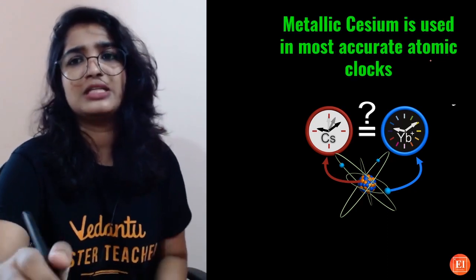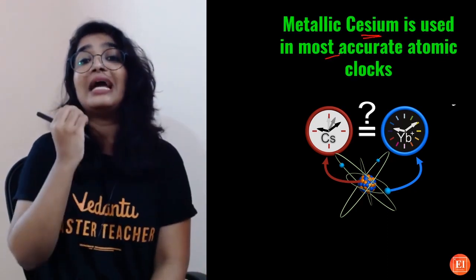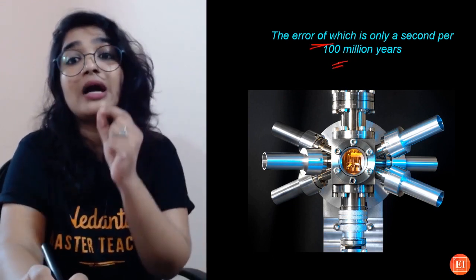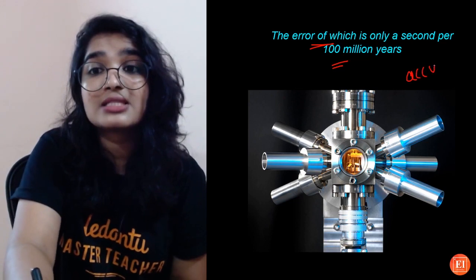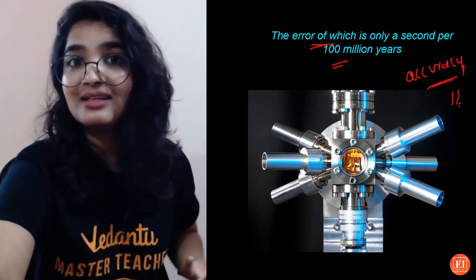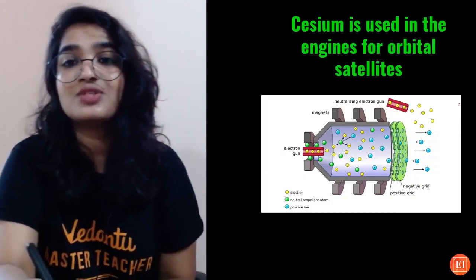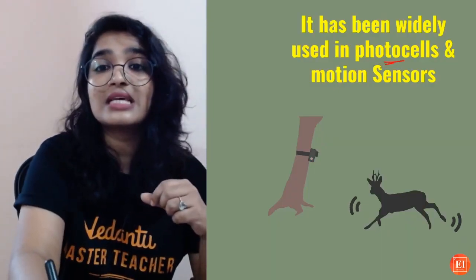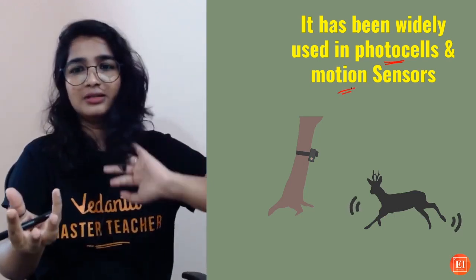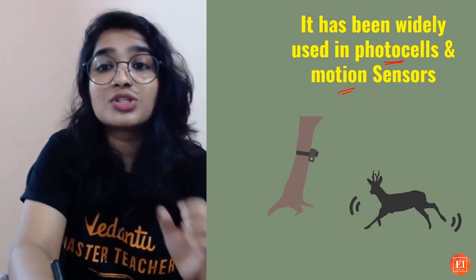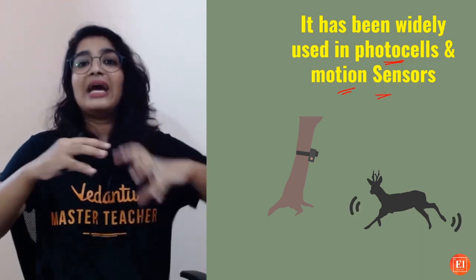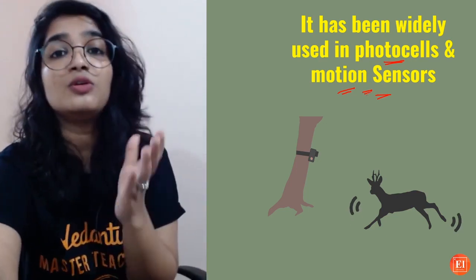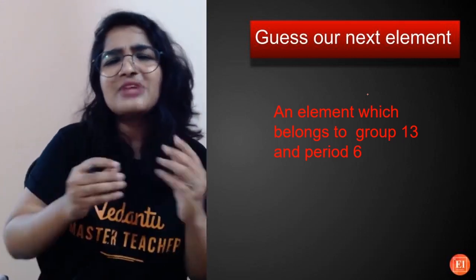Metallic cesium is used in the most accurate atomic clocks, with an error of only one second per 100 million years — you can imagine its accuracy! Cesium is also used in engines for orbital satellites. It has also been widely used in photo cells and motion sensors — for example, in wildlife documentaries they use motion sensors to capture animals and survey which animals have been roaming around a certain area.